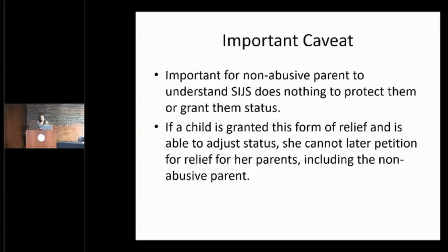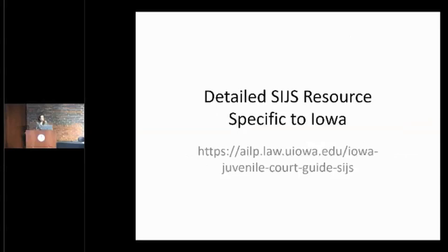It's also important for the non-abusive parent to understand that pursuing this status does nothing to protect them directly — it does not grant them status. And if a child is granted this form of relief and able to adjust status, she cannot later petition for relief for her parents, even the non-abusive parent. If you're interested in learning more about Special Immigrant Juvenile Status, the law school has put forth a resource accessible through a link in the materials. It is extremely detailed, takes you through a lot of potential case scenarios, and is an excellent resource if you want to understand more about this form of relief.